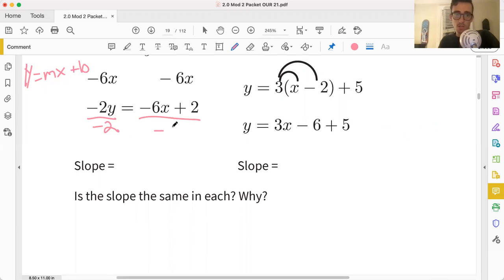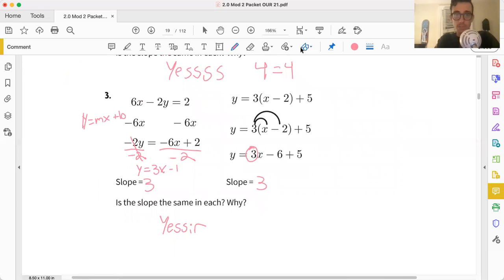Getting us y equals, well, negative 6 divided by negative 2 is just 3. x is along for the ride. 2 divided by negative 2 is just negative 1. Over here, y is already isolated. So our slope is pretty easy to spot, it's just 3. And it's 3 here. Wow, they're the same. Is the slope the same in each? Yes, sir. I'll leave the fourth one for you. See you in the set.